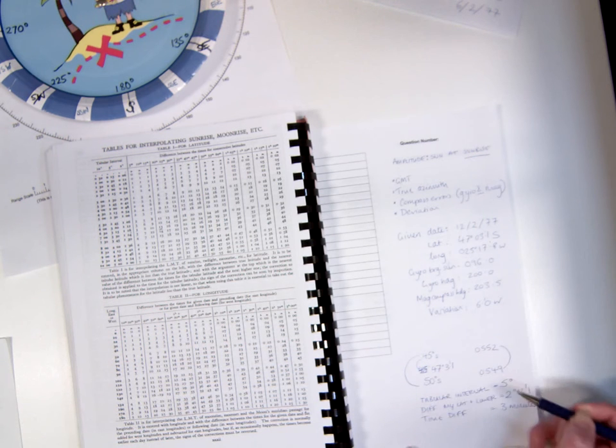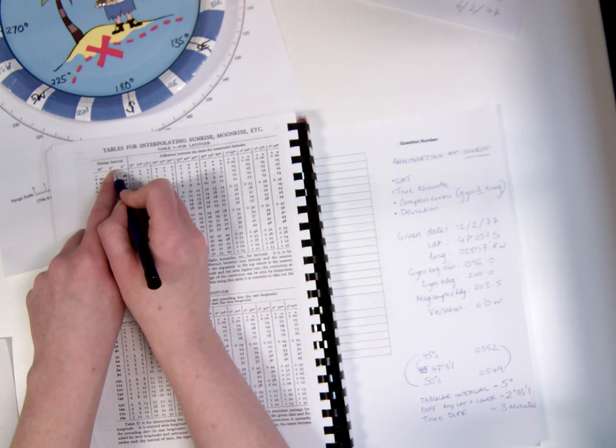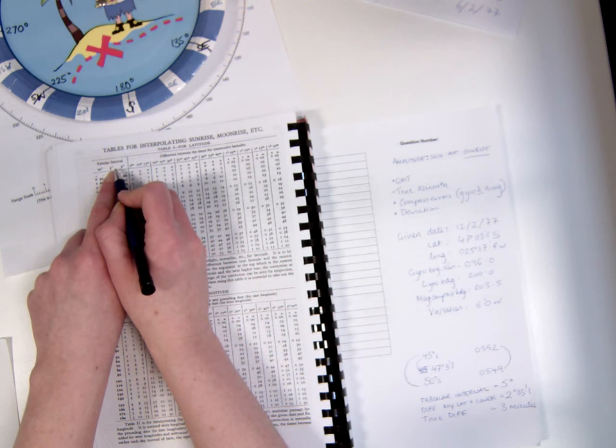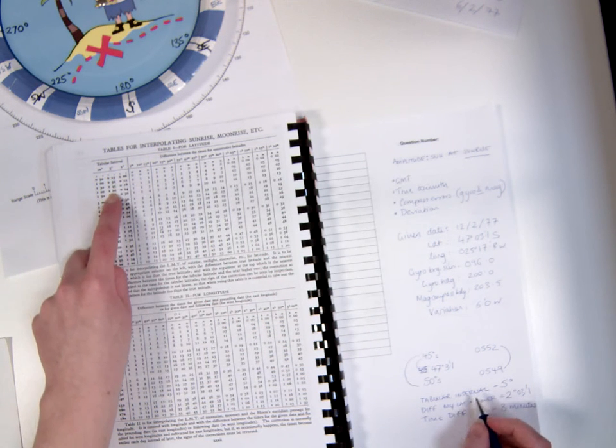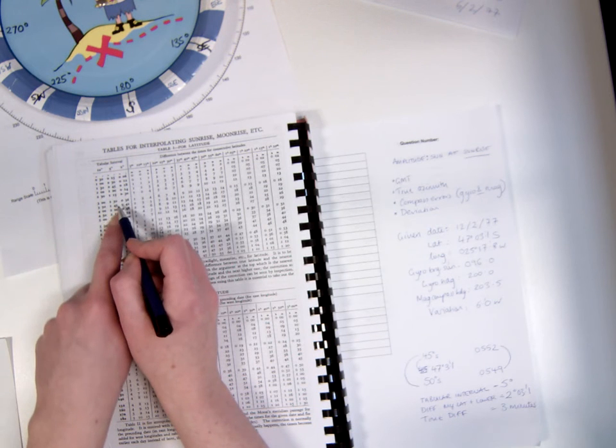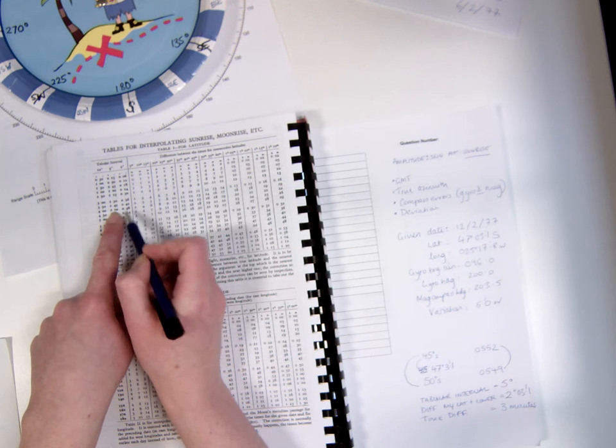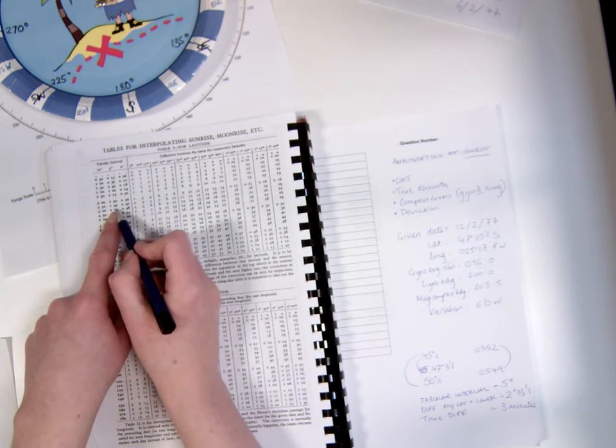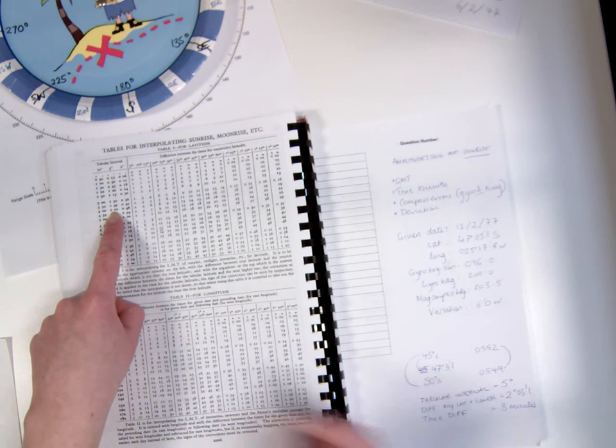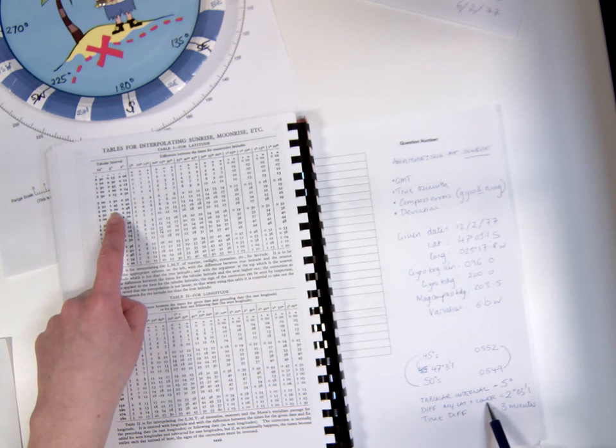The tabular interval is where I'm going to enter the table. I'm going to enter the table at 5 degrees and I'm going to read down that column until I find the difference between my latitude and the lower latitude. The closest value I can find is the 2 degree value. You don't need to interpolate between the rows of this table, so I'm quite happy to remain in this row. You just have to pick the closest value to your difference between your latitude and the lower latitude, so in this case 2 degrees will suffice.